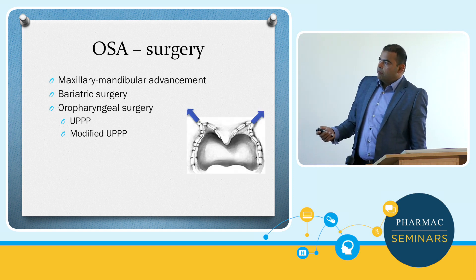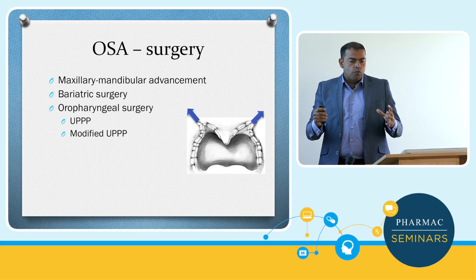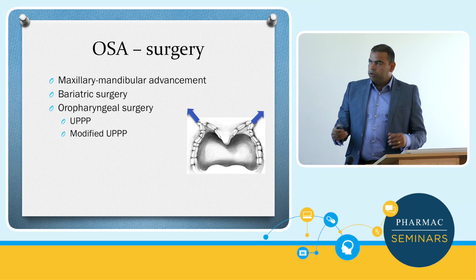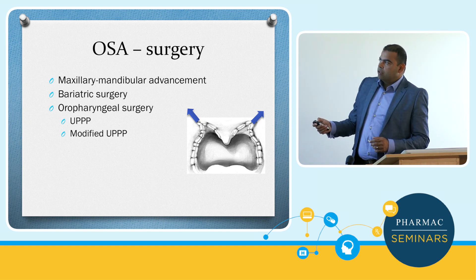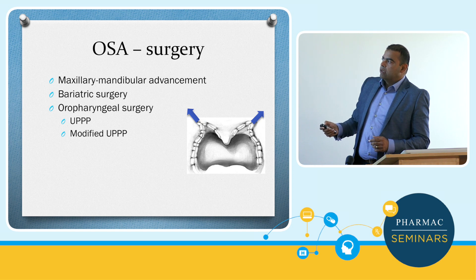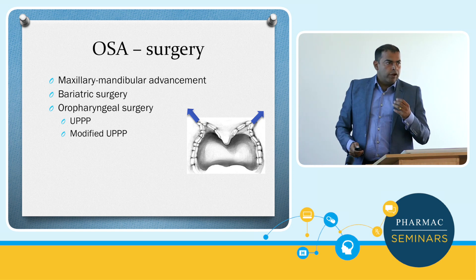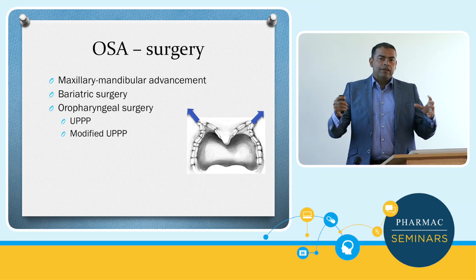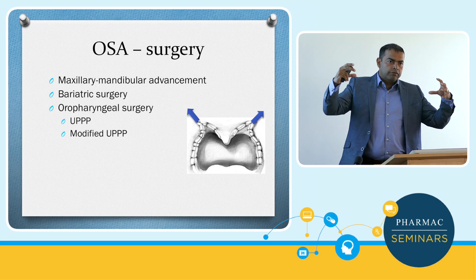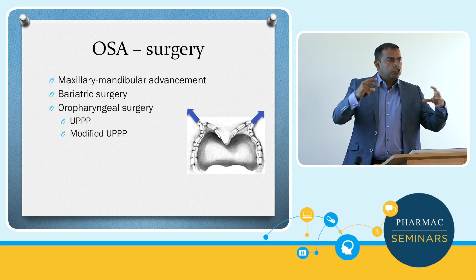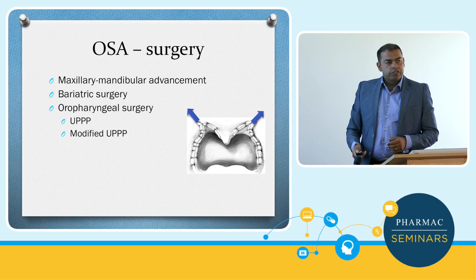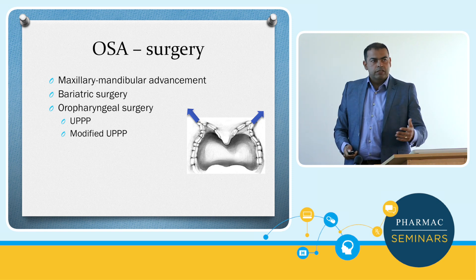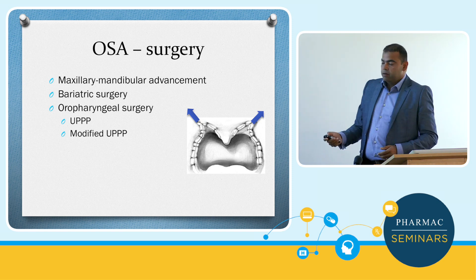Modern variants of UP3 — modified UP3 — rely on changing the vectors of scarring so that the scarring actually pulls the oropharynx wider open with time. Not dramatically wider, but it counteracts the long-term flaccidity of tissues and gives more sustainable results. Five-year results are well-sustained.